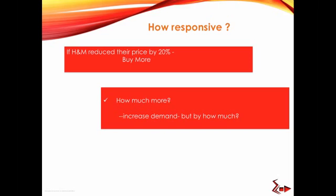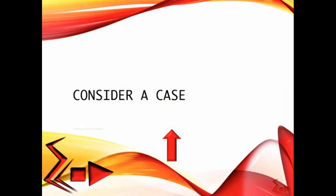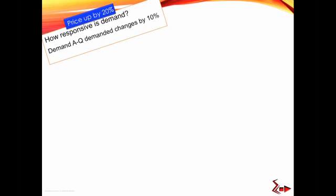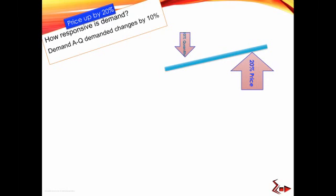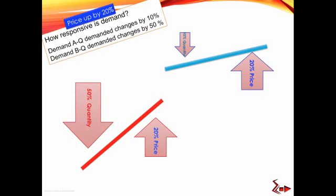Elasticity of demand is simply measuring how responsive a demand function is. Let's assume price increases by 20 percent and consider two cases. Demand A: price increases by 20 percent, quantity demanded decreases by 10 percent. Demand B: the same 20 percent price increase causes quantity demanded to fall by 50 percent. With the same price change, Demand A is less responsive than Demand B. We conclude that Demand A is inelastic and Demand B is elastic.